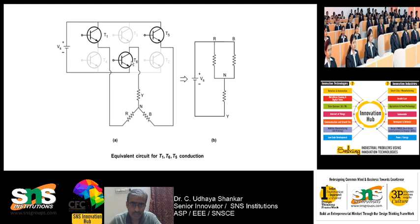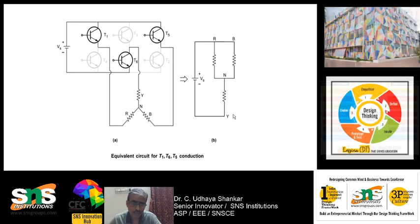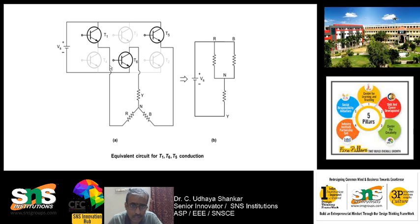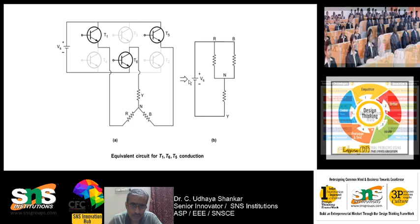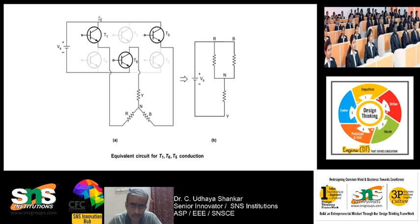With T5, T6, and T1 on, the positive voltage goes through T1 through R-phase, and through T5 through B-phase — so T5 behaves as a short circuit when switched on. R-phase and B-phase are now in parallel, whereas Y-phase provides the return path through T6 to the negative terminal. The equivalent circuit shows two upper transistors and one lower transistor conducting, with R and B phases connected to the positive terminal and Y-phase connected to the negative terminal.